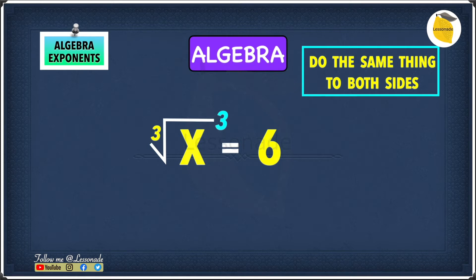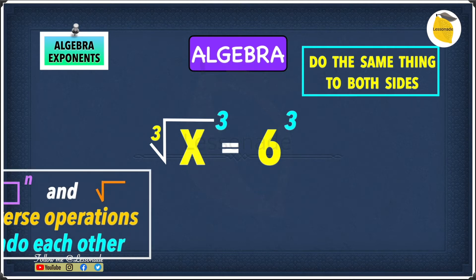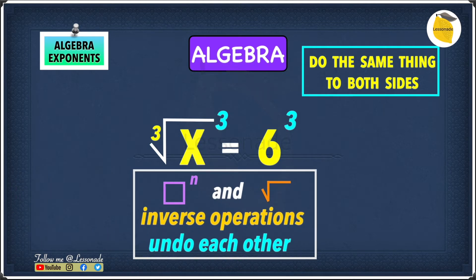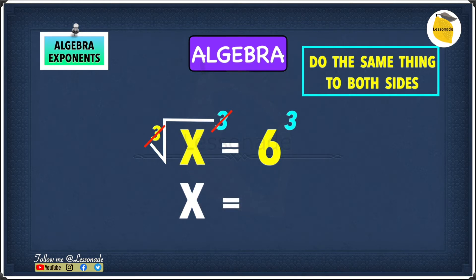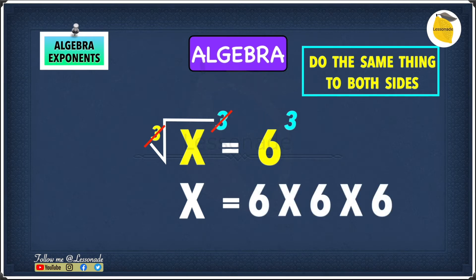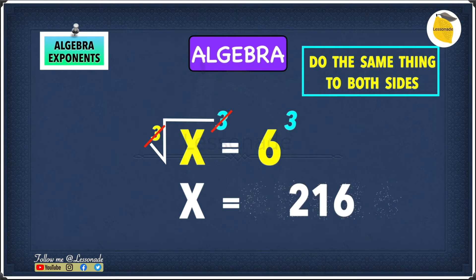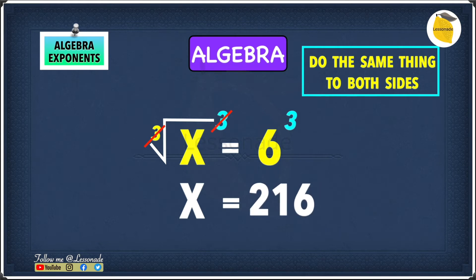Before we cancel, we need to do the same thing to both sides, so cube the other side as well. The cube root and the cube cancel each other out because exponents and roots are inverse operations, leaving us with x. For the other side, six cubed is six times six times six, which gives an answer of 216.